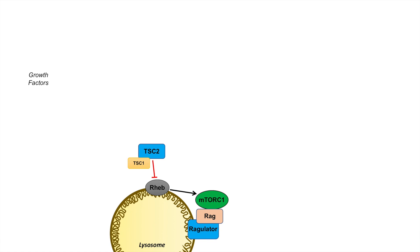Growth factors are a major regulator of mTOR signaling. Remember that mTOR is involved in growth, proliferation, and survival. Growth factors lead to the upregulation or activation of the RAS-RAF-MEK-ERK pathway, leading to activation of RAS and ERK. Growth factors lead to the activation of ERK1 and 2, which leads to the inhibition of the TSC2 complex. Since TSC2 is an inhibitor of RHEB, inhibiting TSC2 activates RHEB. Once RHEB is activated and GTP-loaded, it leads to the activation of mTOR complex 1 and mTOR signaling.